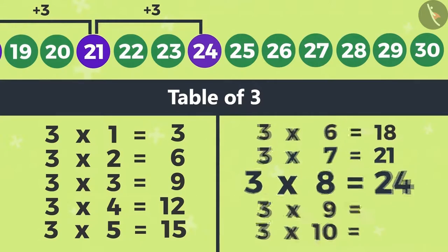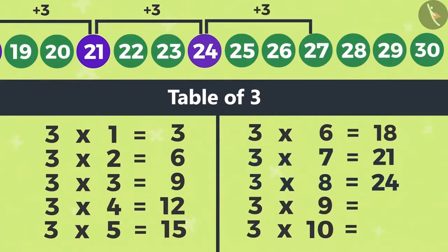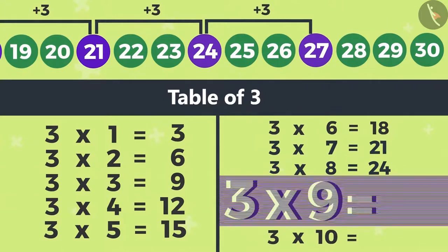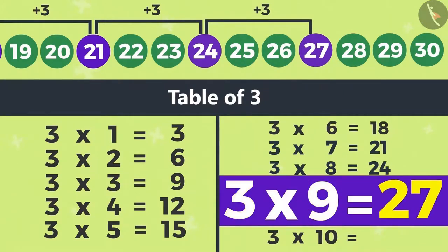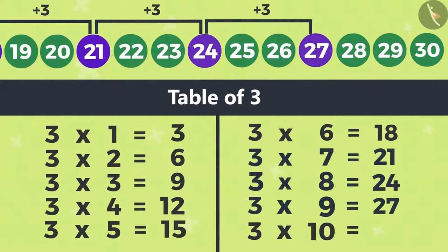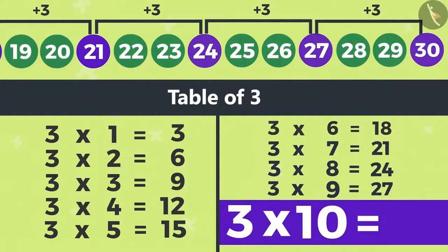24 will be 3 numbers after 21. That is 3 eights are 24. The third number after 24 is 27. That is 3 nines are 27. And the third number after 27 will be 30. That is 3 tens are 30.